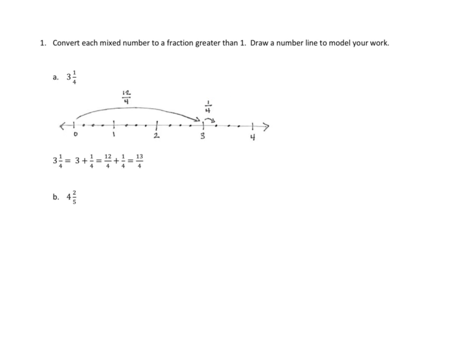So when they did a number sentence, they said that three and one-fourth equals three, plus one-fourth. But in the next version, they substituted twelve-fourths instead of three, and that's twelve-fourths plus a fourth. Then they added twelve-fourths and one-fourth together, which they can do because they're the same units, and they got thirteen-fourths. So now we've made our trip from our mixed number, three and one-fourth, all the way to our improper fraction, thirteen-fourths.